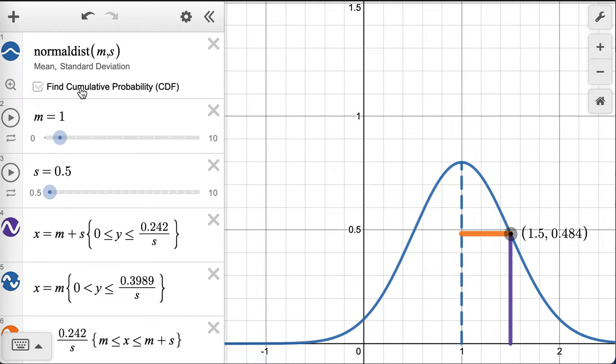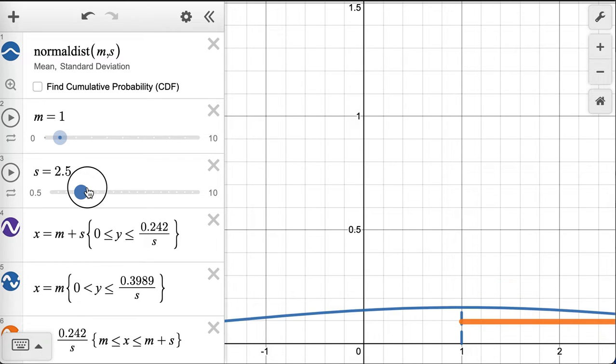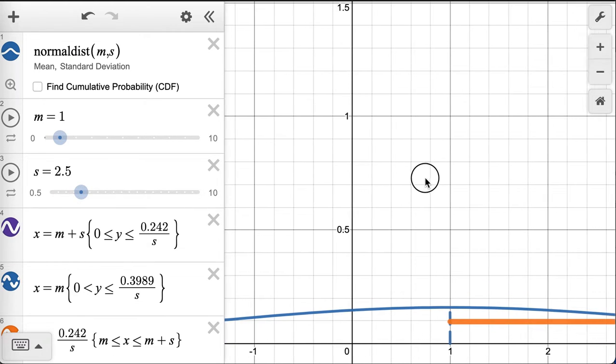And the area, therefore, stays the same between the two. It's also the case that if I flatten this out, say I go up to a standard deviation of 2.5, it's gotten very flat.